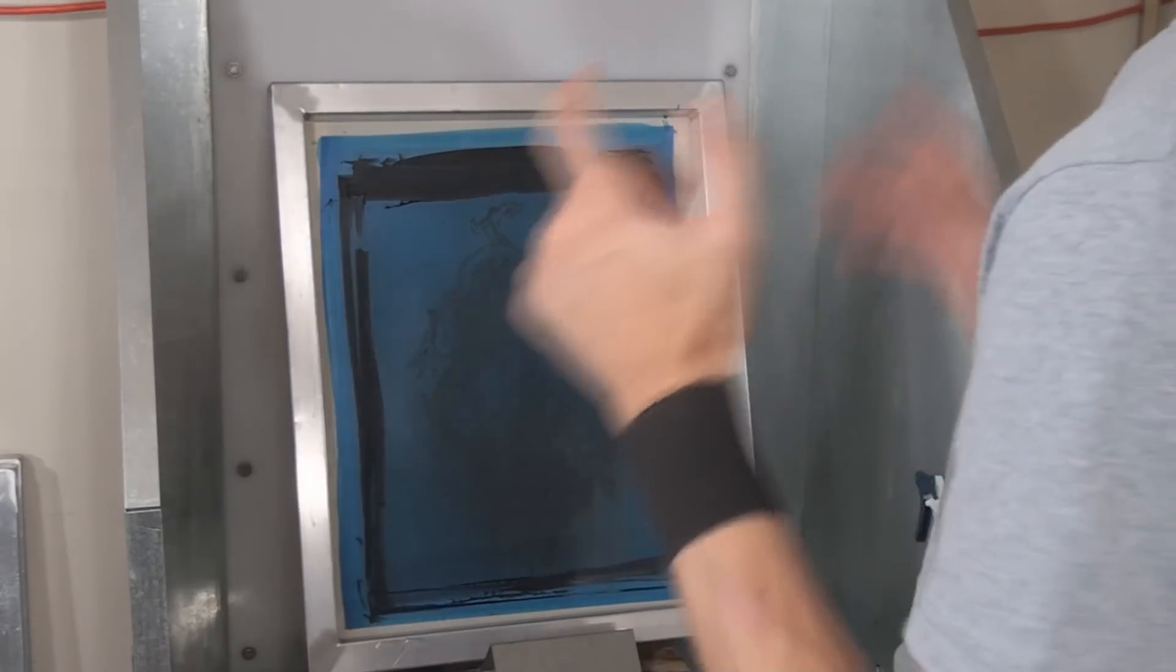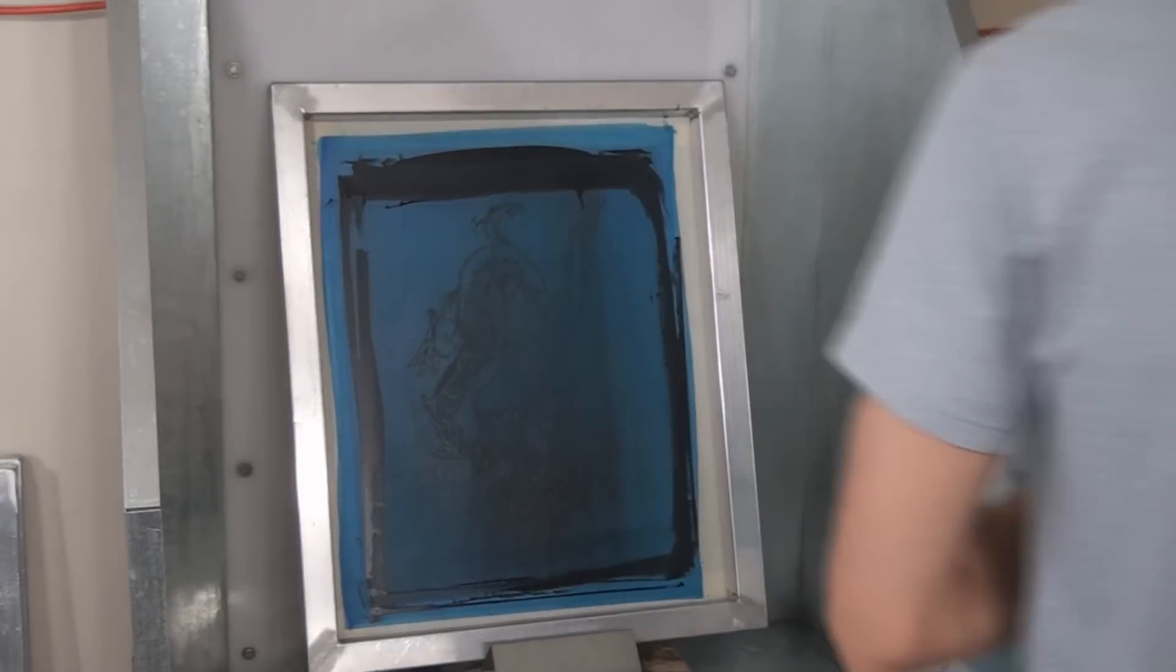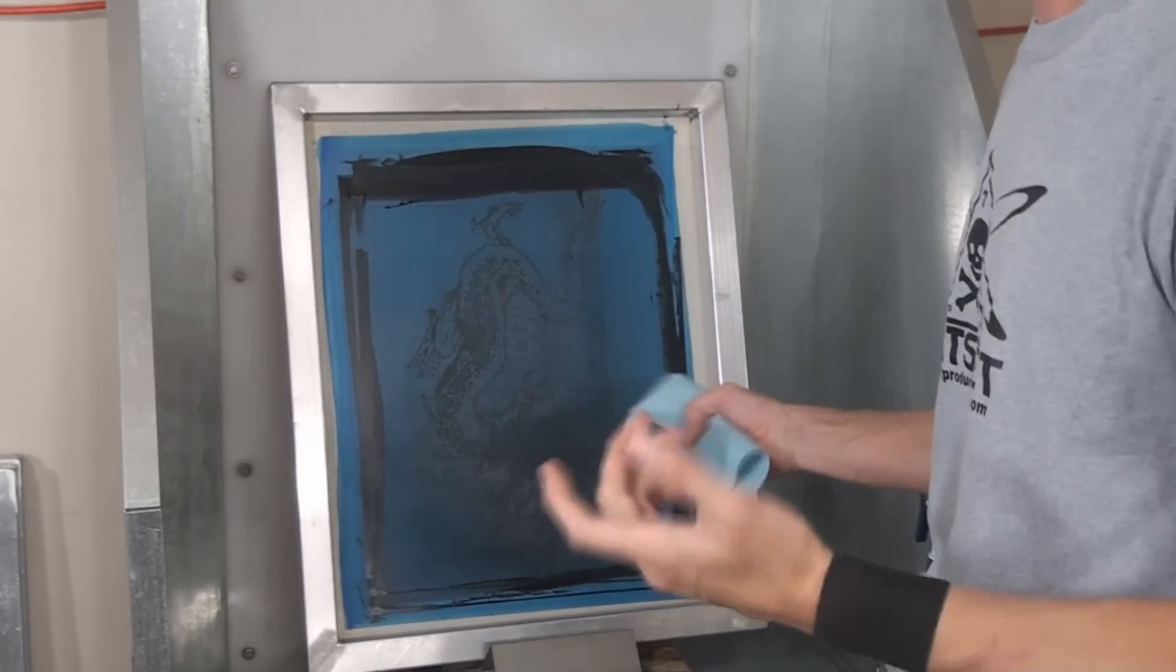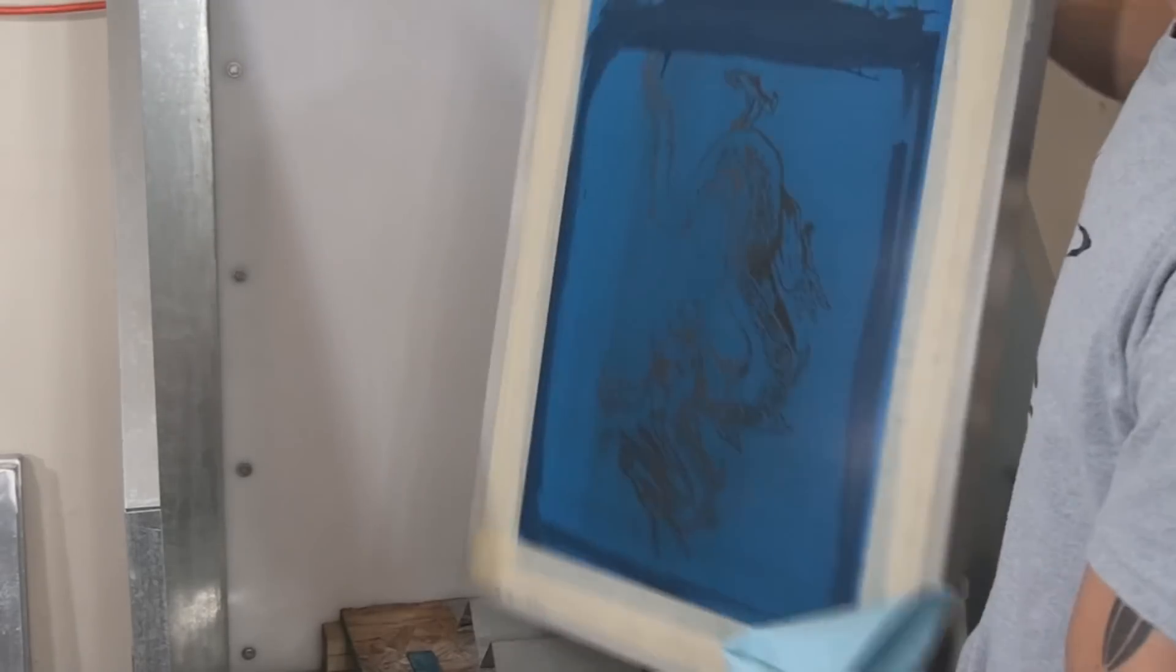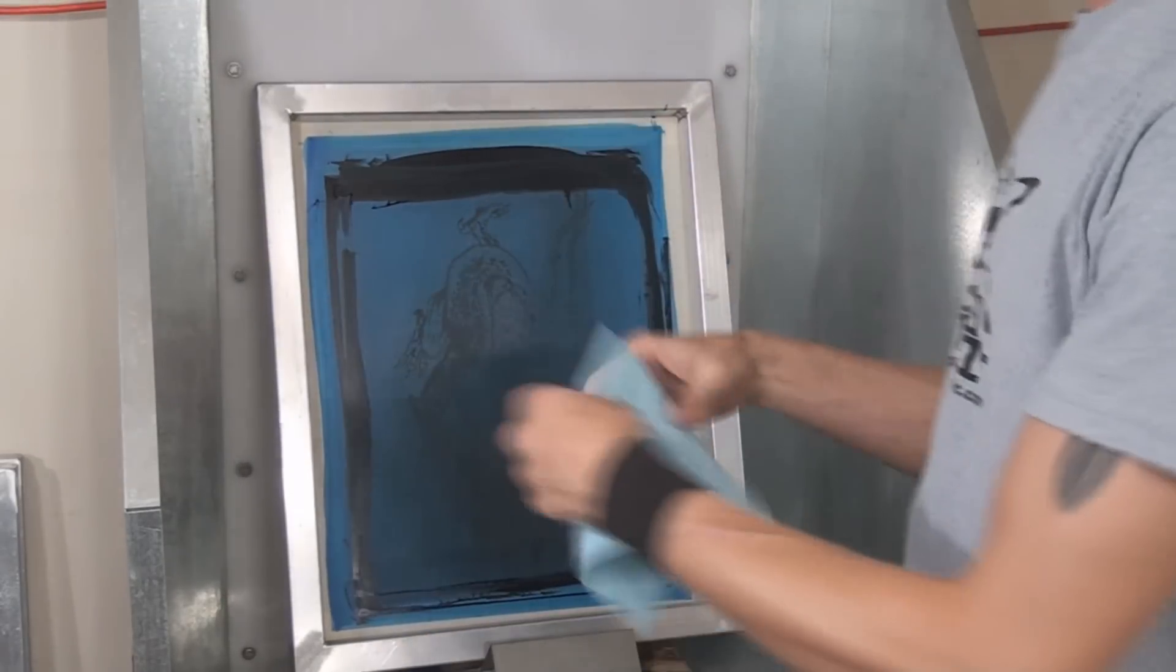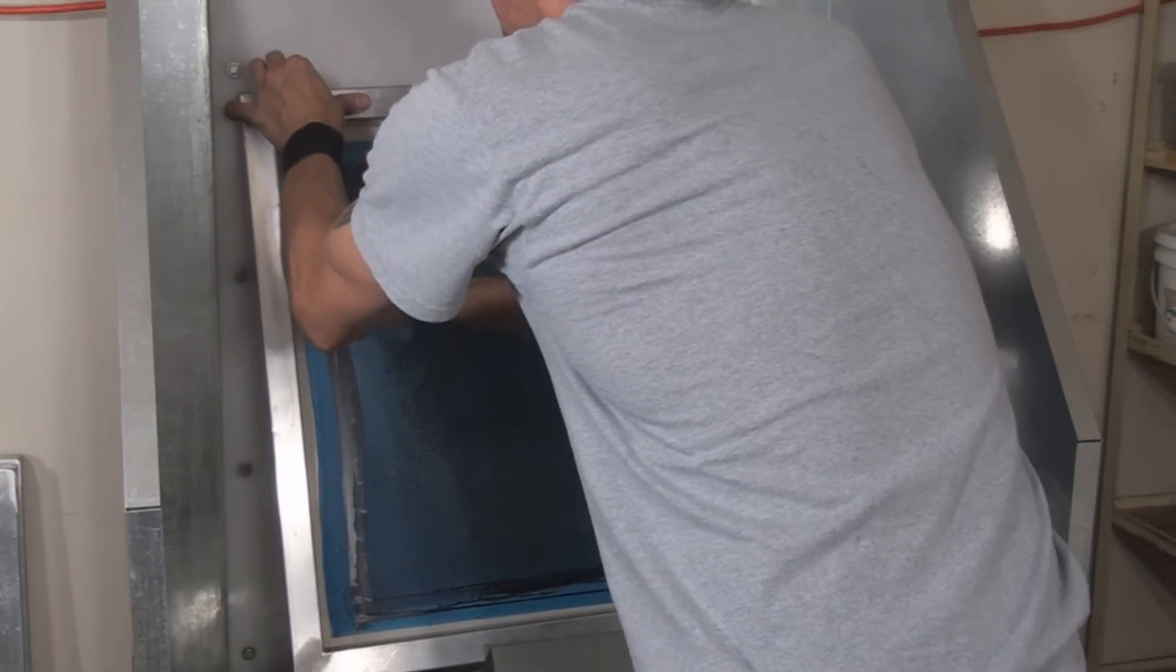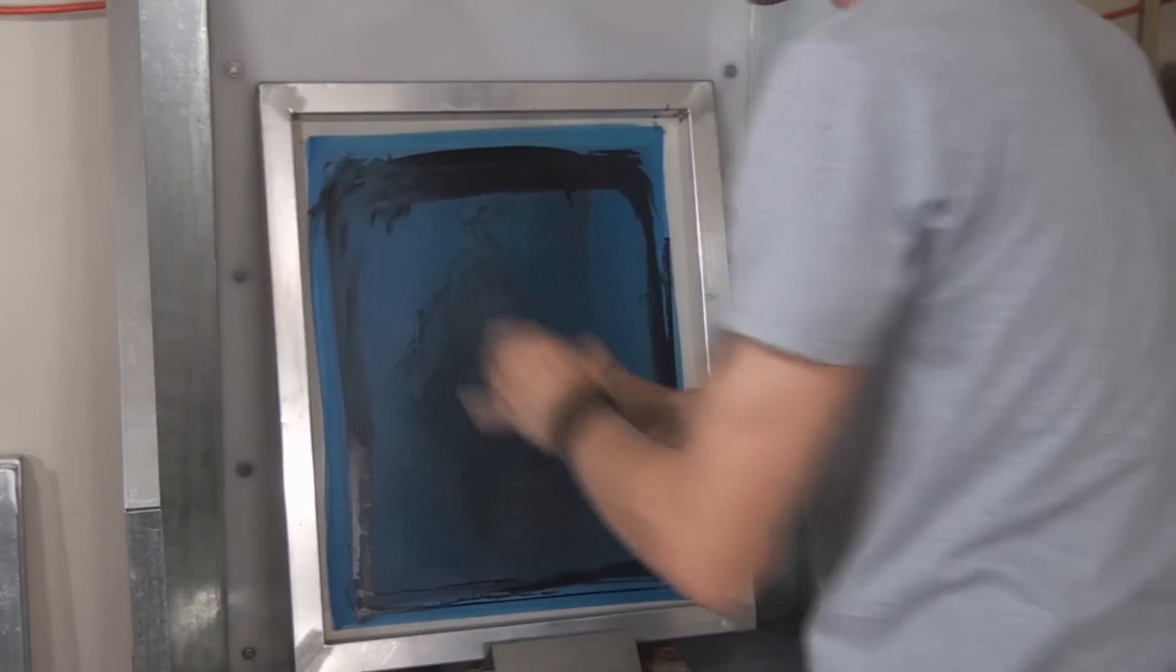So first things first, when I'm going to reuse a screen, I don't take the tape off or anything, I just bring it in here, and the first thing I do is take a dry rag, just a dry rag, and wipe off some of this excess ink.